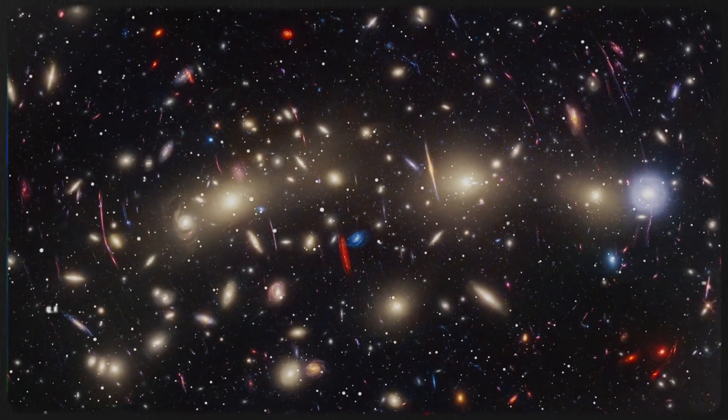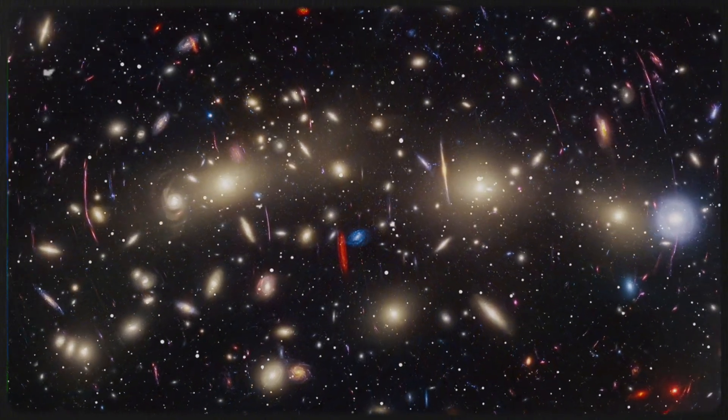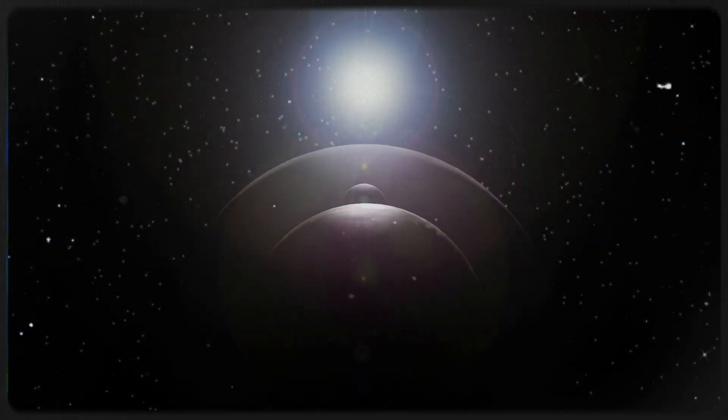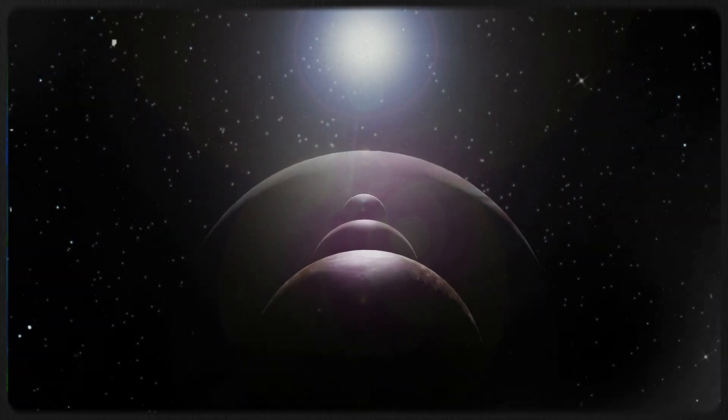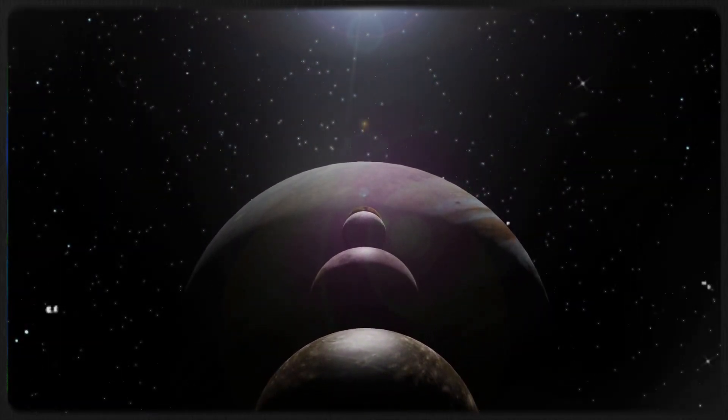Thanks to Webb's capabilities, we now know the population drops off significantly below 2 or 3 Jupiter masses. That might be the true bottom limit—unless, of course, we're looking at rogue planets that were ejected from their solar systems. For the first time, we've actually reached that edge.